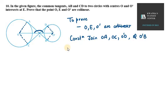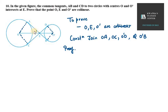Now let's move on to the proof part. First of all, we give names to the angles. This is angle 1, angle 2, angle 5, angle 6, angle 3, and angle 4.